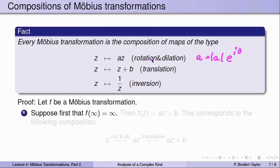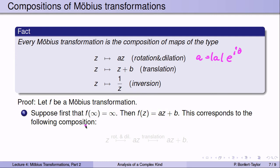Let's see why that is true. Suppose f is a Möbius transformation. If f maps ∞ to ∞, we saw that f is of the type az + b. But az + b is a composition of two types: first z gets mapped to az (the rotation-dilation type), and then we add b to az, which is a translation. So az + b is indeed a composition of these two Möbius transformations.